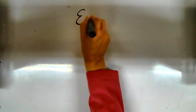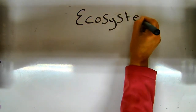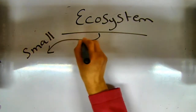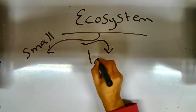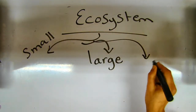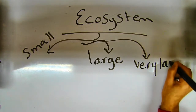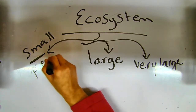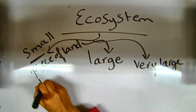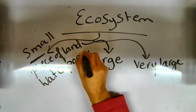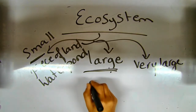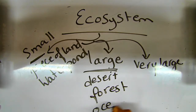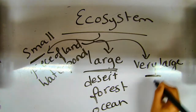An ecosystem may be a small area, a large area, or a very large area. A small area is like a patch of land, water, or a pond. A large area is like a desert, forest, or ocean. A very large area would be like the universe.